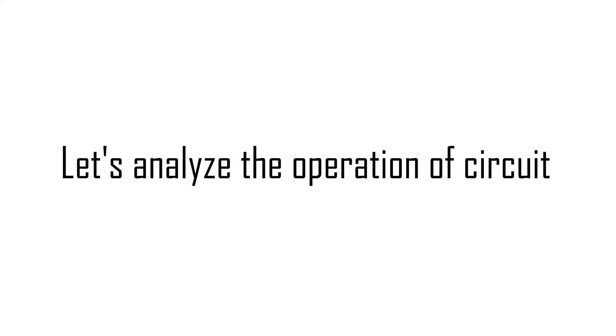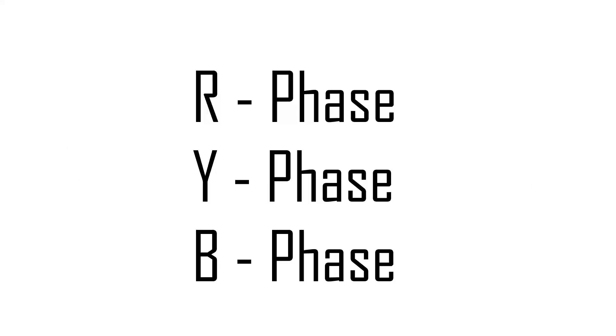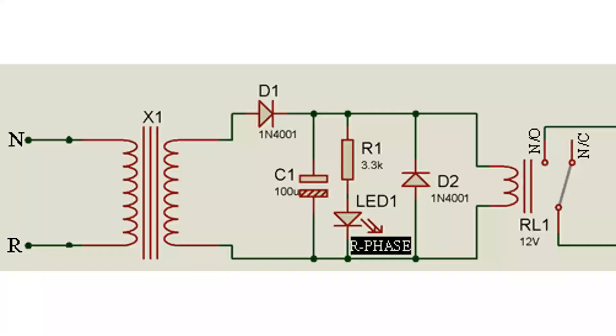Now let's analyze the circuit. We had divided the entire circuit into three main parts, one for R phase, one for Y phase and lastly one for B phase. If we analyze the circuit for R phase, then R phase is connected to one terminal of transformer X1, where neutral is connected to another terminal. When R phase is available, the step-down voltage, that is 12 volt, is available at secondary winding of transformer X1, which is rectified by half-wave rectifier designed using diode D1 and filtered using capacitor C1. This voltage is used to energize the relay RL1. One flyback diode is added across coil of relay RL1 in order to protect the entire circuit from transient voltage effect of relay coil.